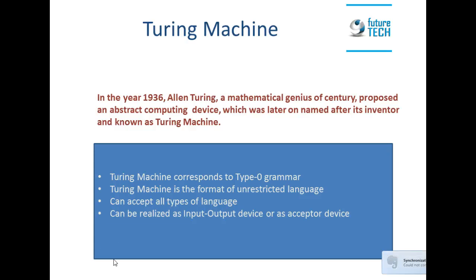Hello, in this lecture I am going to introduce Turing machine. Turing machine was proposed by Alan Turing in the year 1936. Alan Turing, a British mathematician and genius of the century, proposed this computing device which was entirely abstract, far before the real computer came into being.